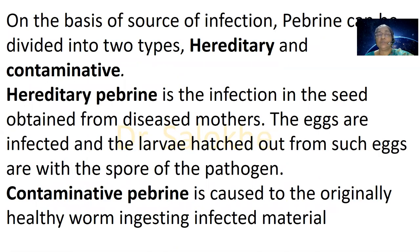On the basis of source of infection, pebrine can be divided into two types: hereditary and contaminative. Hereditary pebrine is the infection in the seed obtained from diseased mothers — when the adult moth is infected, due to transovarial transmission, the spores go into the eggs and pass into the next generation. Contaminative pebrine is caused when originally healthy worms ingest infected material.